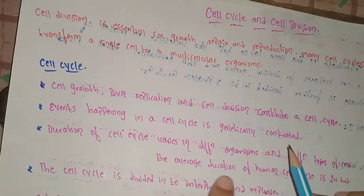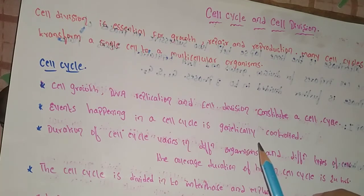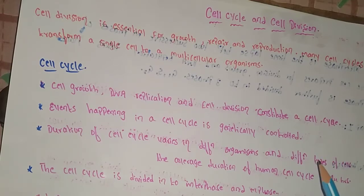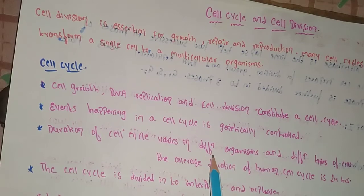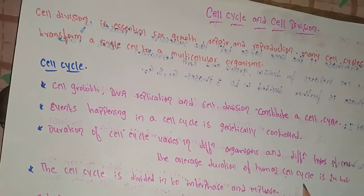Events happening in a cell are genetically controlled by genes present in the DNA. If an error occurs in the DNA, these genes are affected. The duration of the cell cycle varies in different organisms and different types of cells.